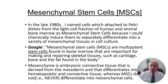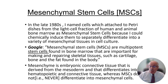In the late 1980s, I named cells which attach to a Petri dish from the light cell fraction of human or animal bone marrow. I named them mesenchymal stem cells because I could chemically induce them to separately differentiate into a variety of mesenchymal tissues in cell culture.